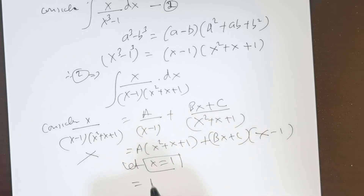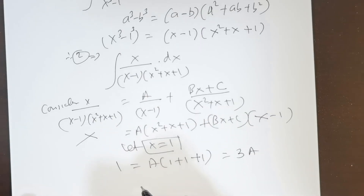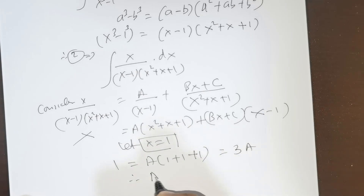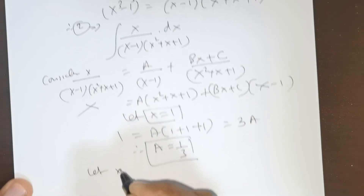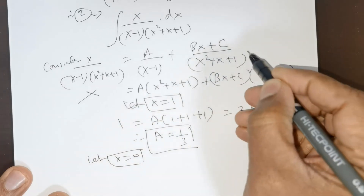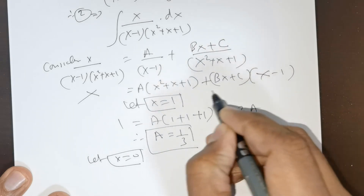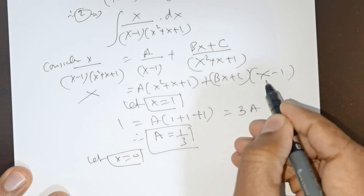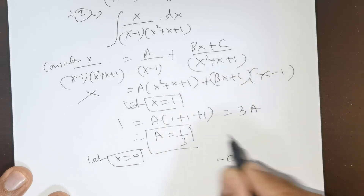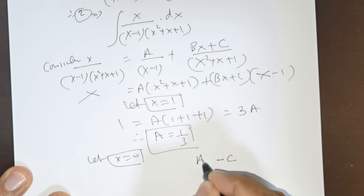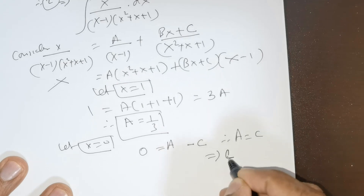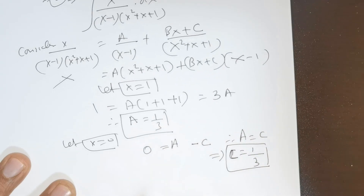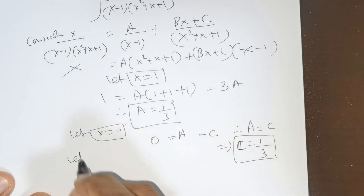First, let x equal 1: this gives A(1 plus 1 plus 1) equals 1, so 3A equals 1, therefore A equals 1/3. Next, let x equal 0: all x-terms vanish and we get A minus C equals 0, so C equals A, which means C equals 1/3.